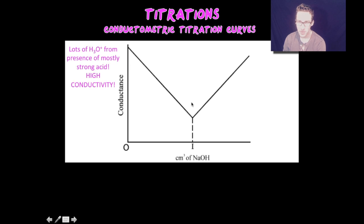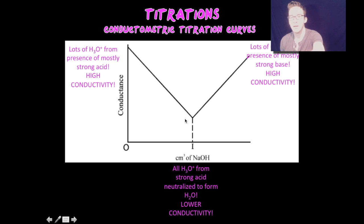As we add base, we neutralize the acid and form water and salt, so conductivity decreases until the equivalence point. Once past the equivalence point, lots of hydroxide ions are in solution, so conductivity increases again. You can perform a titration with a conductivity meter to determine the equivalence point.